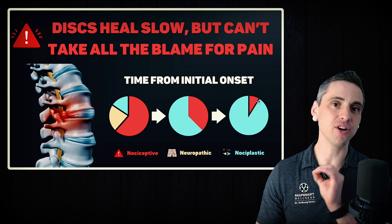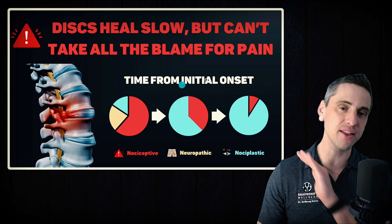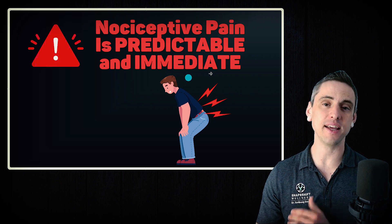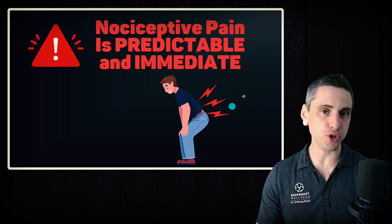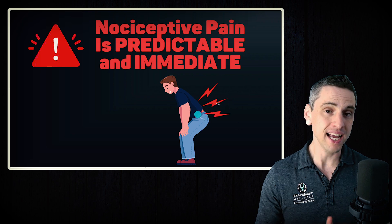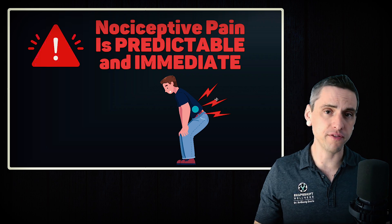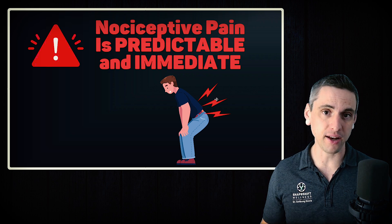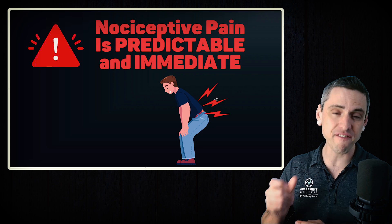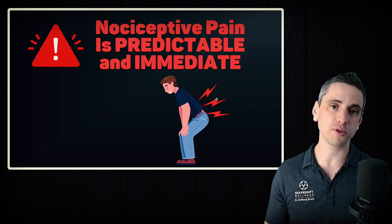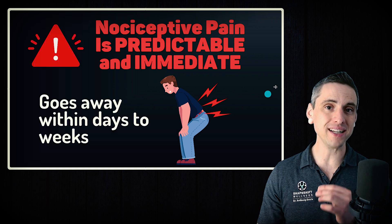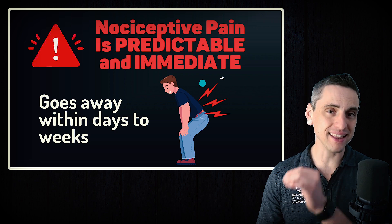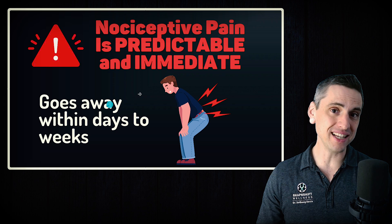Even if the disc herniation never heals, the longer your pain goes on, the more likely that the pain has nothing to do with the disc. How else do you know it's nociceptive pain? Nociceptive pain is very predictable and immediate — for example, every single time that you bend your spine, you get the exact same pain, always. It's not sometimes fine and sometimes spasming like crazy. That is not nociceptive pain. Nociceptive pain has tissue damage, which means every single time you irritate that tissue in the same way, it will always respond the same way. It will follow a typical trajectory where it's really sensitive after the initial injury, and day by day it gets less and less intense, going away within days or at least within weeks.